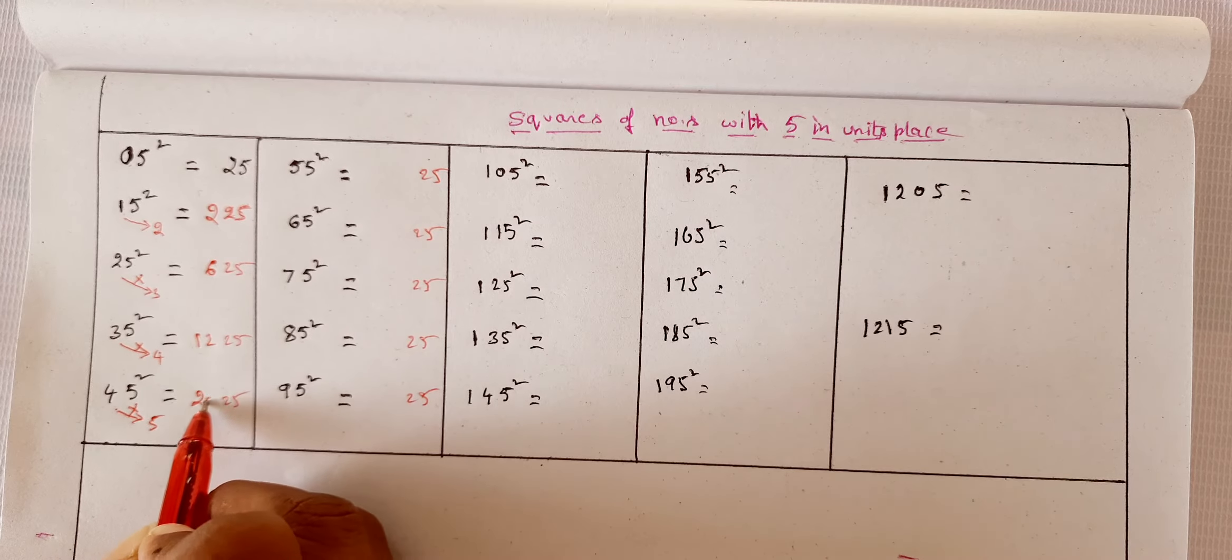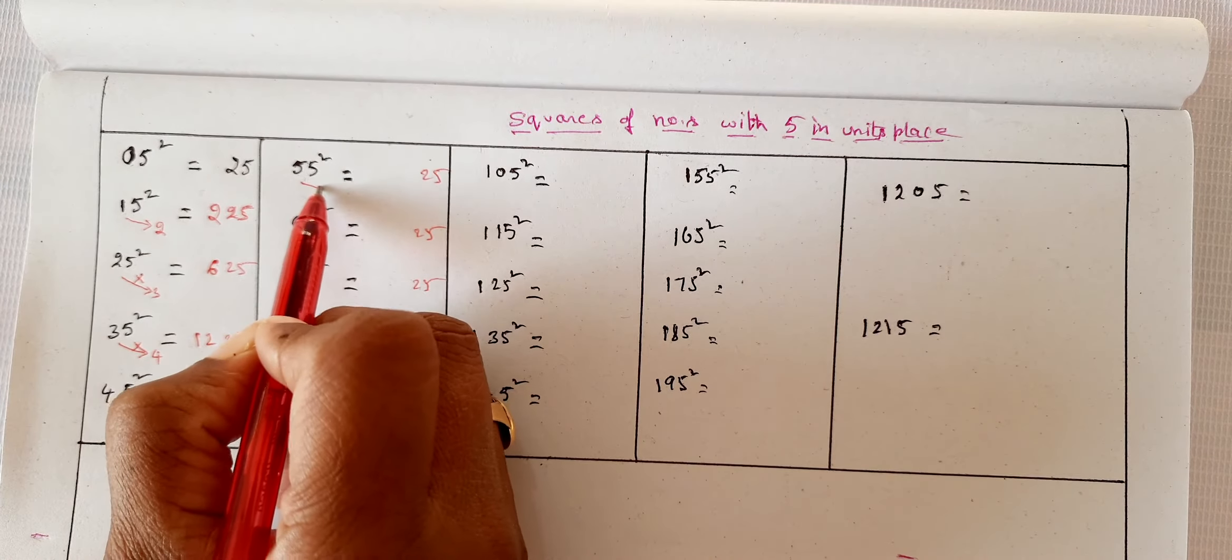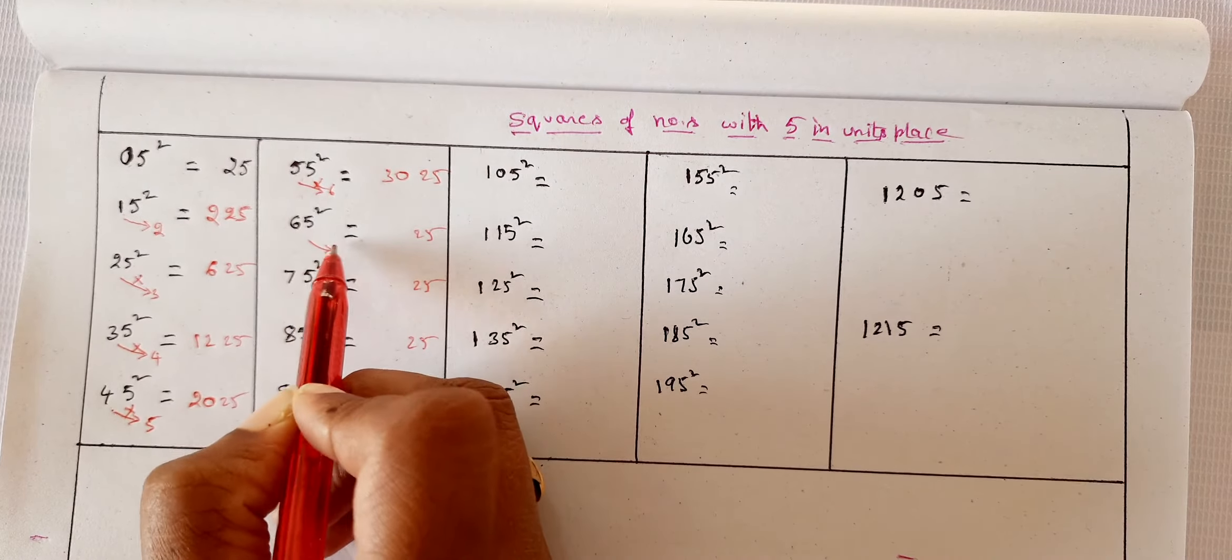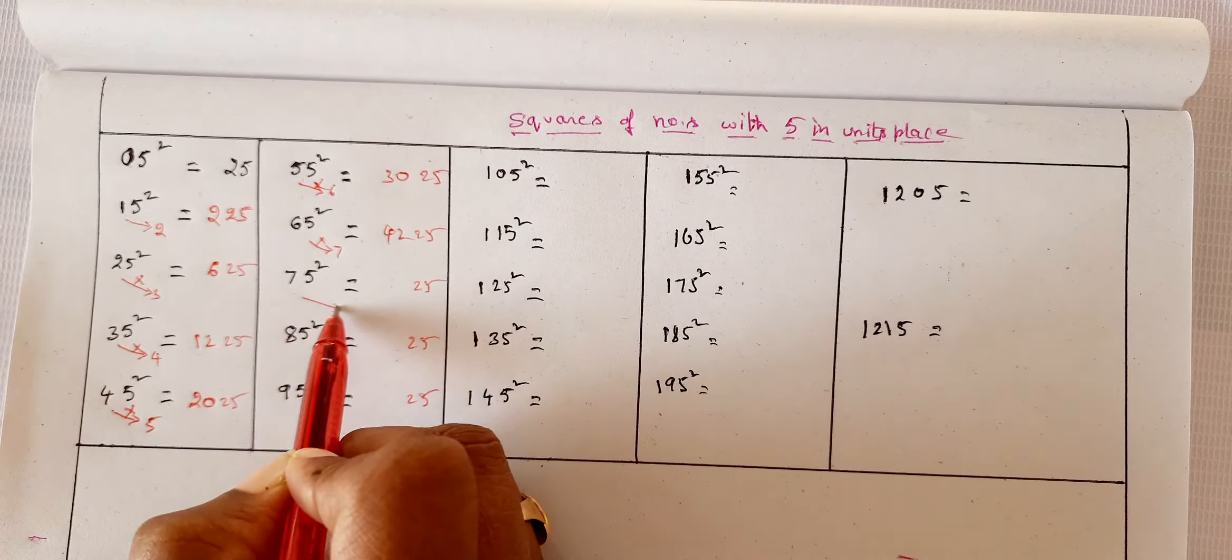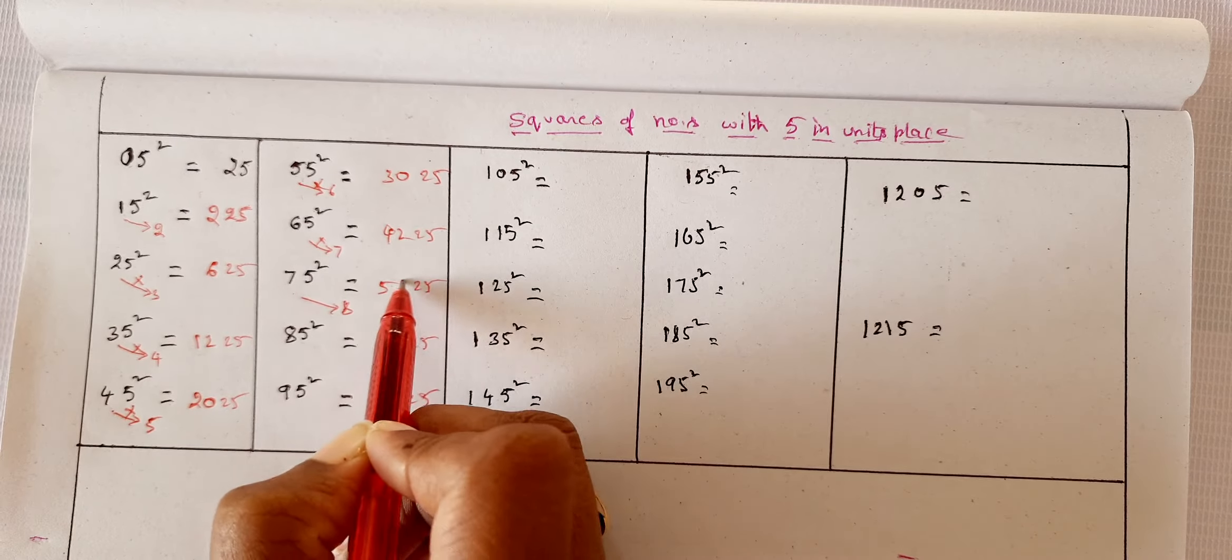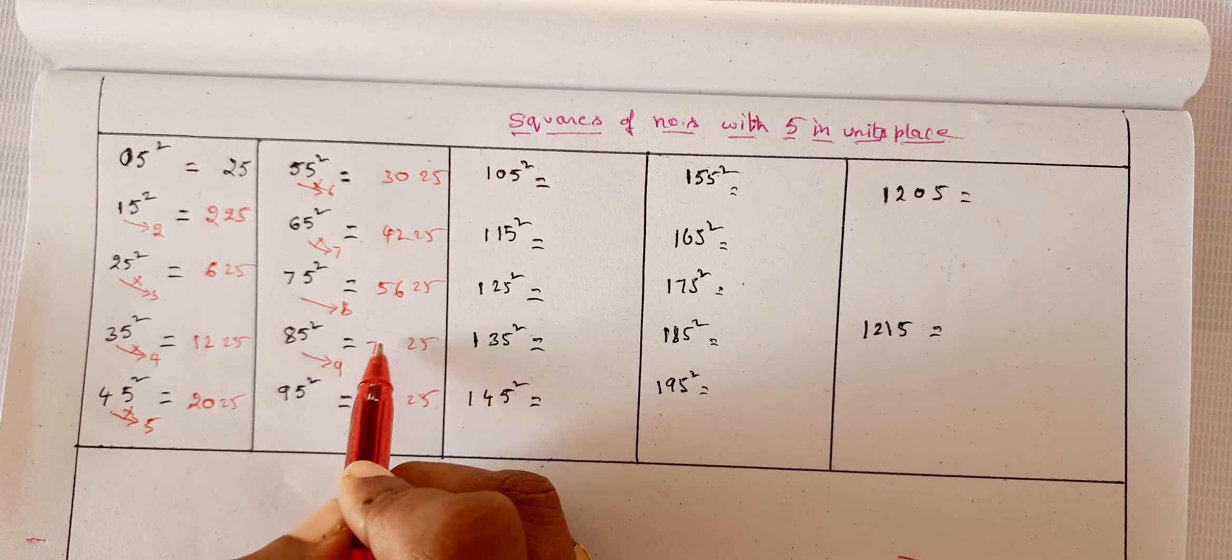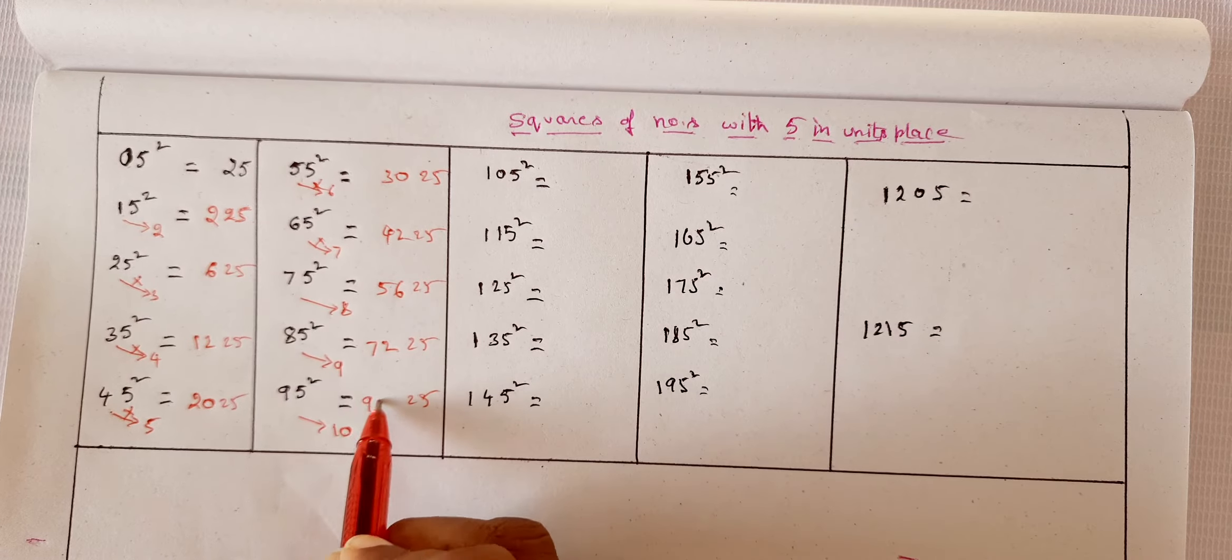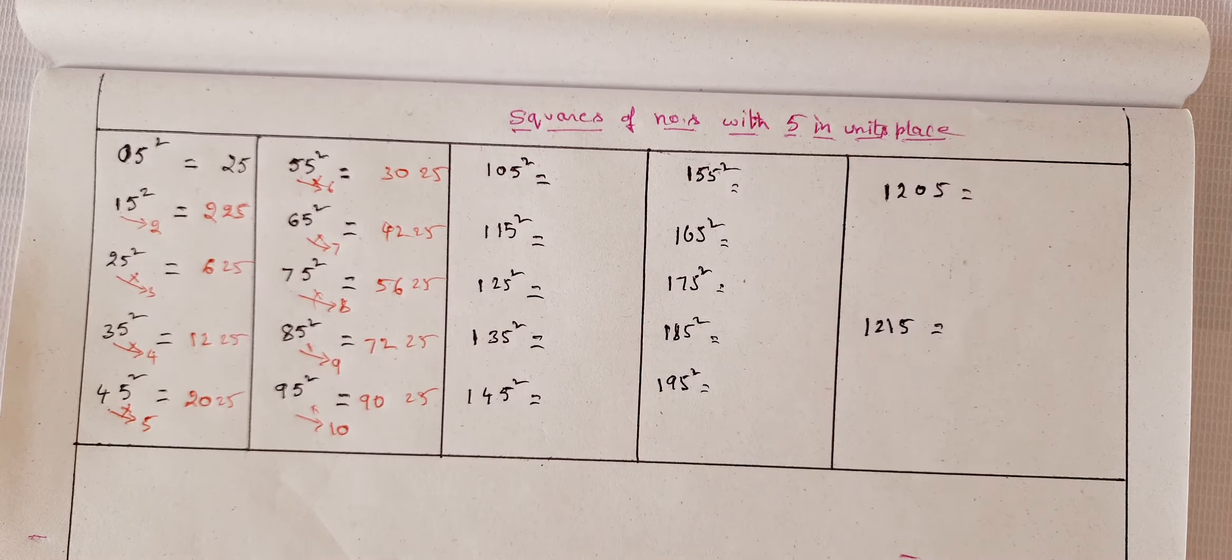35 squared. Four, next number is five. Four times five is 20. It is not even taking one second. Right? 55 squared: 5 into 6 is 30. 6 into 7 is 42.